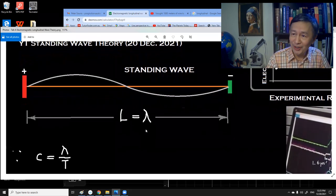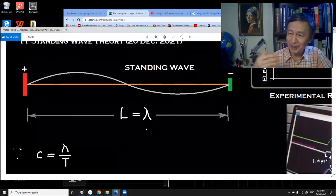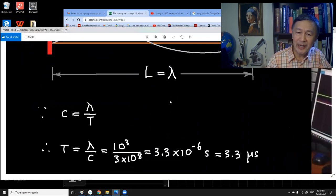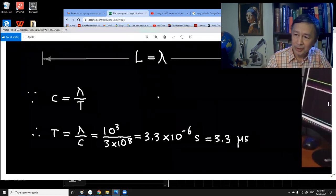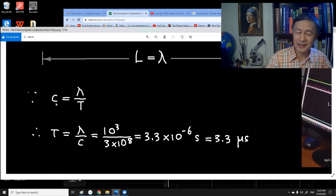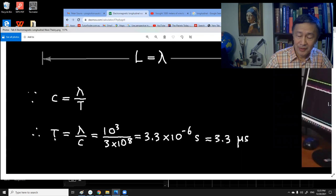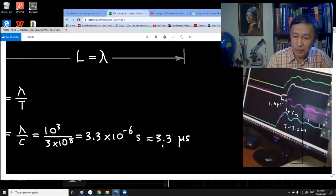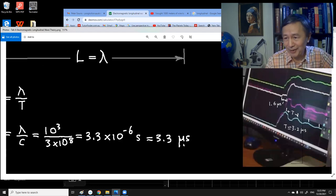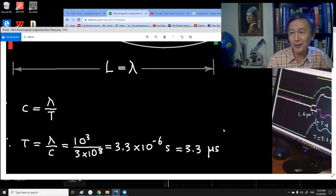Now, if we assume this wave travels at the speed of light, then we can apply this simple logic that the speed of light equals wavelength divided by the period. So the period of the oscillation can be estimated as 3.3 microseconds. So this is the theory.